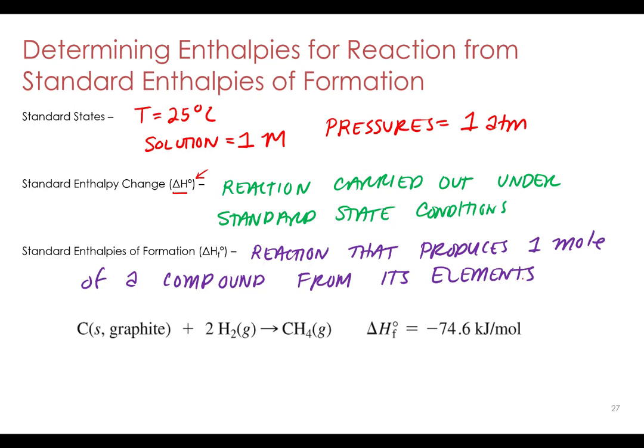Here's an example of a standard enthalpy of formation reaction for producing methane. Methane is CH4, and the elements that make it up are carbon and hydrogen. So you produce that compound from its elements — carbon, whose lowest potential energy allotrope is graphite — and hydrogen, H2, which is one of the seven diatomic elements. When we balance it, we need two moles of hydrogen. That's your heat of formation reaction.